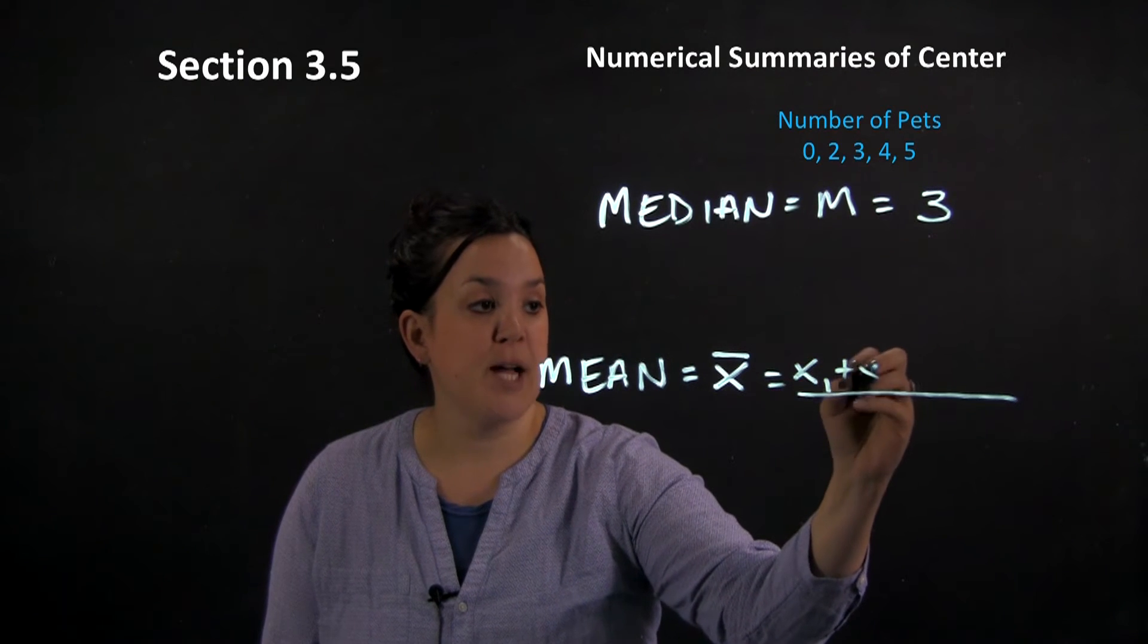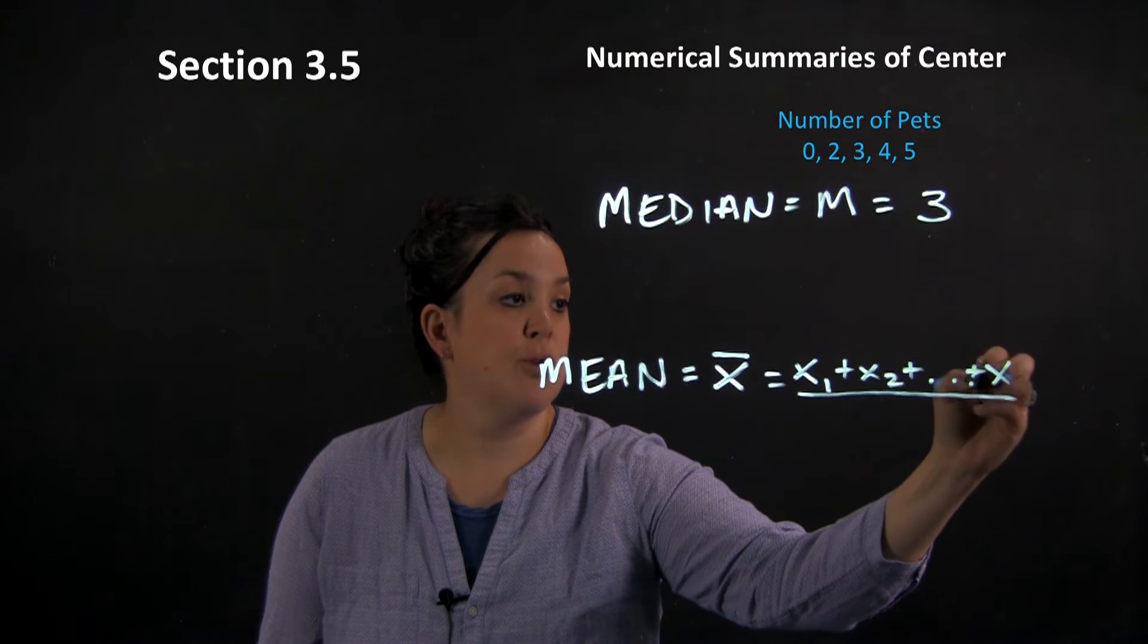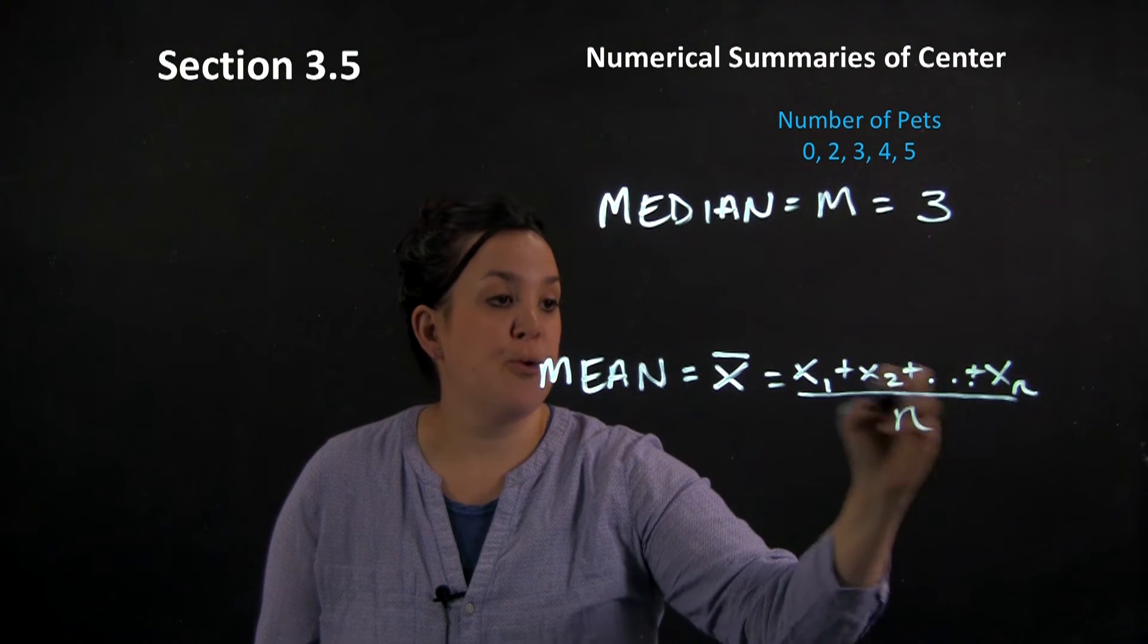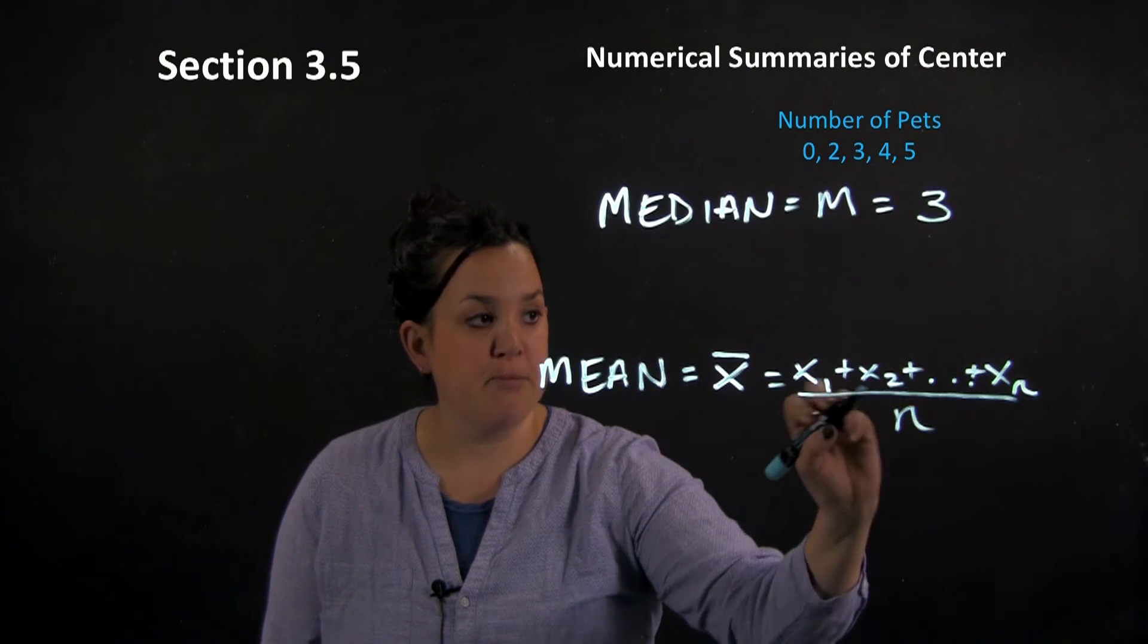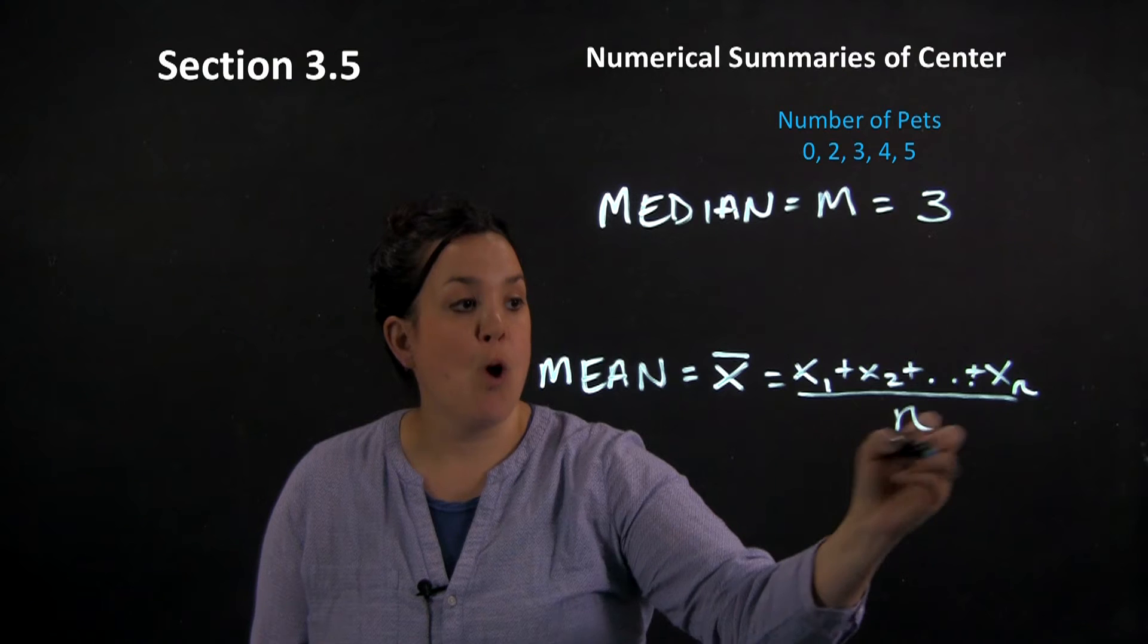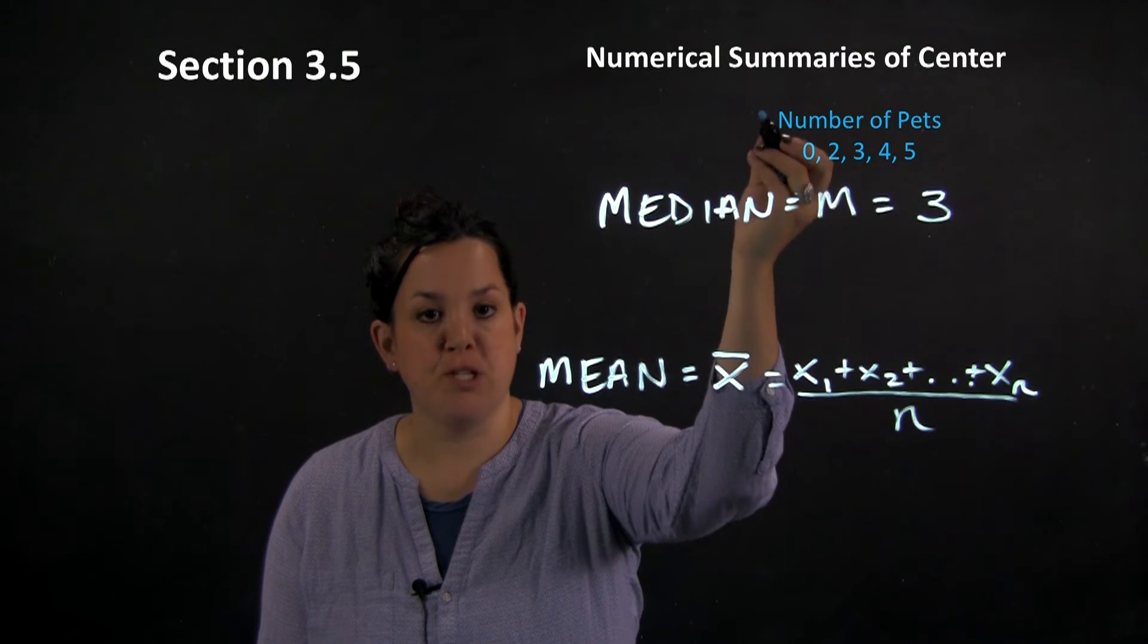So x sub 1 plus x sub 2, and you do it all the way out to x sub n. So this simply means that you do it for the first observation, the second observation, all the way to the last observation, where n is the total number of observations. So x sub 1 here would just be 0.